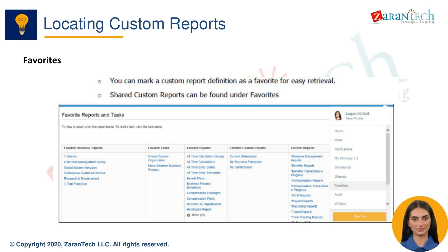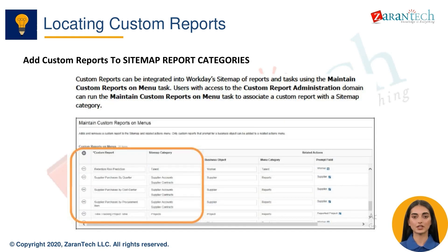Another way is to add custom reports to your favorites. Favorites are accessible from the home page and profile menu — adding frequently used reports here makes them quickly accessible. You can also add custom reports to report categories in the Sytemap, which helps group related reports together and provides a structured way to access them.